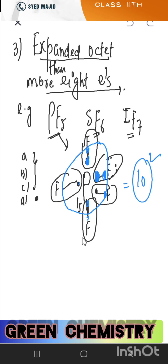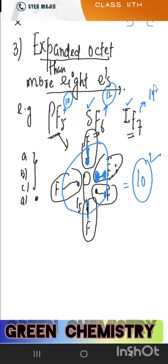Similarly for SF₆: sulfur forms 6 bonds with fluorine. Each bond contributes 2 electrons to sulfur, so 6 × 2 = 12 electrons around sulfur. For IF₇: iodine (a halogen with 7 valence electrons) forms 7 bonds, giving 7 × 2 = 14 electrons around iodine. So all these molecules have more than 8 electrons — they show expanded octet and are exceptions to the octet rule.